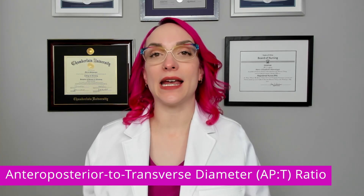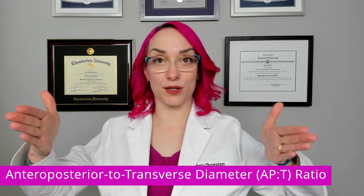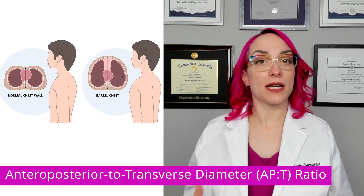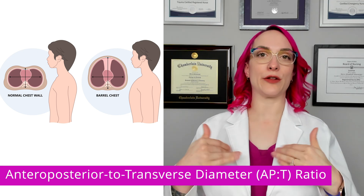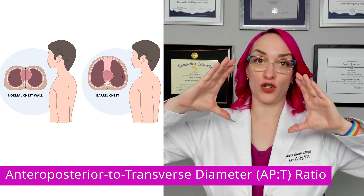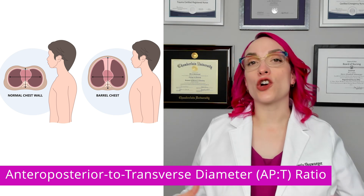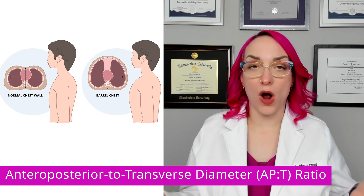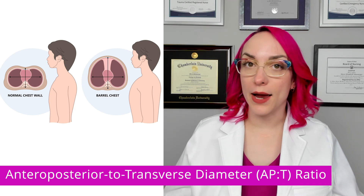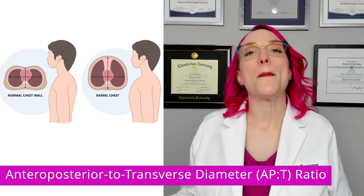If I see a deviation — if the ratio is one to one, meaning the chest is as big AP as it is transverse — this is called barrel chesting. Barrel chesting is where the chest looks more like a barrel rather than a rectangular shape; we have a one-to-one ratio. This is a very common finding in emphysema or COPD where we have air trapping. When we chronically trap air and hold onto it, we end up with hyperinflation of the lungs that over time increases the chest ratio to one to one or potentially worse barrel chesting.